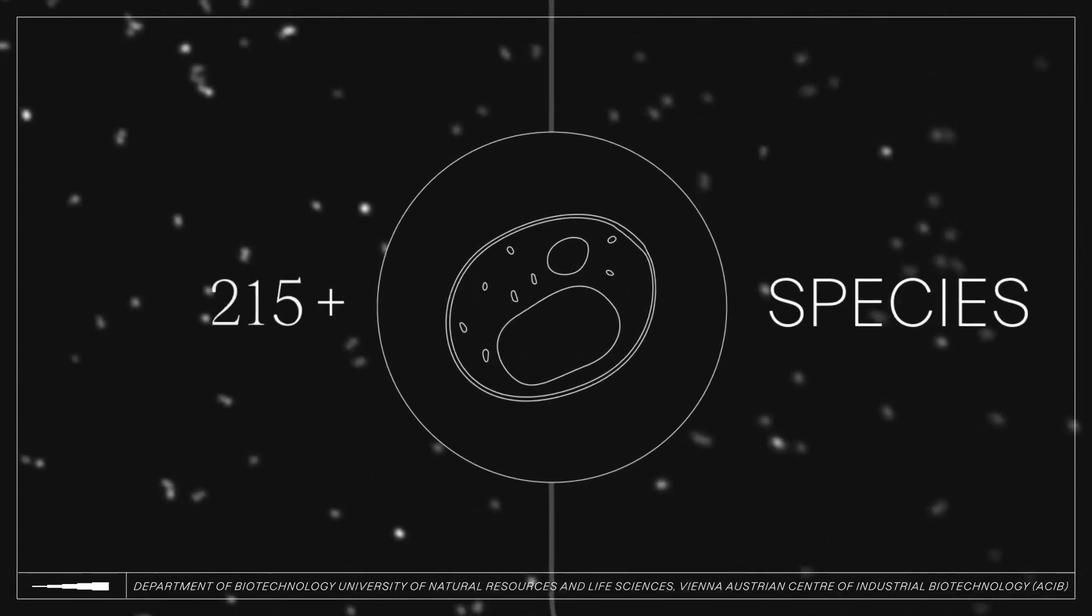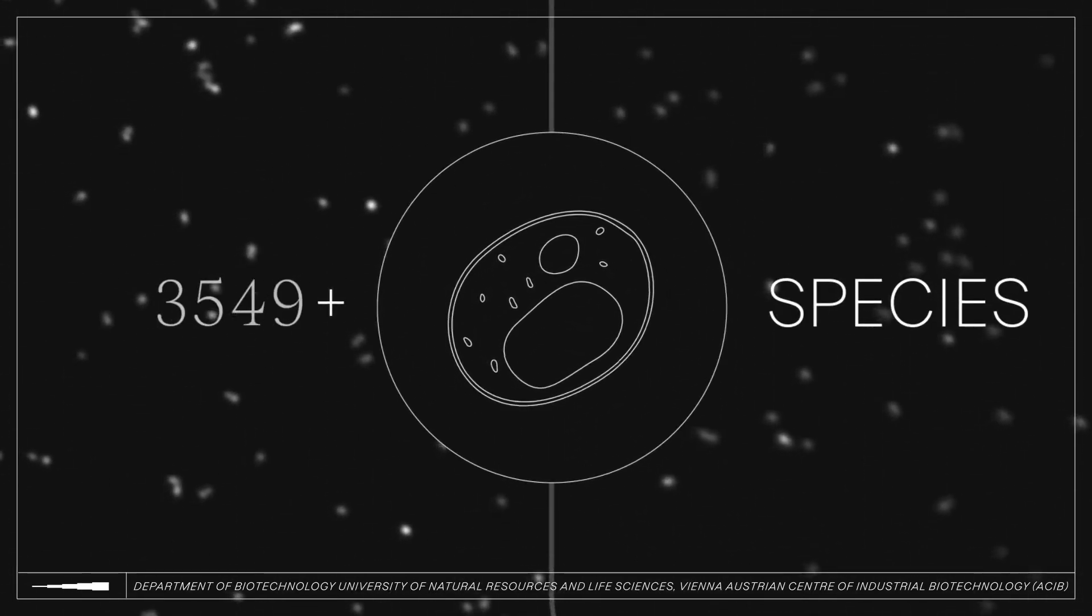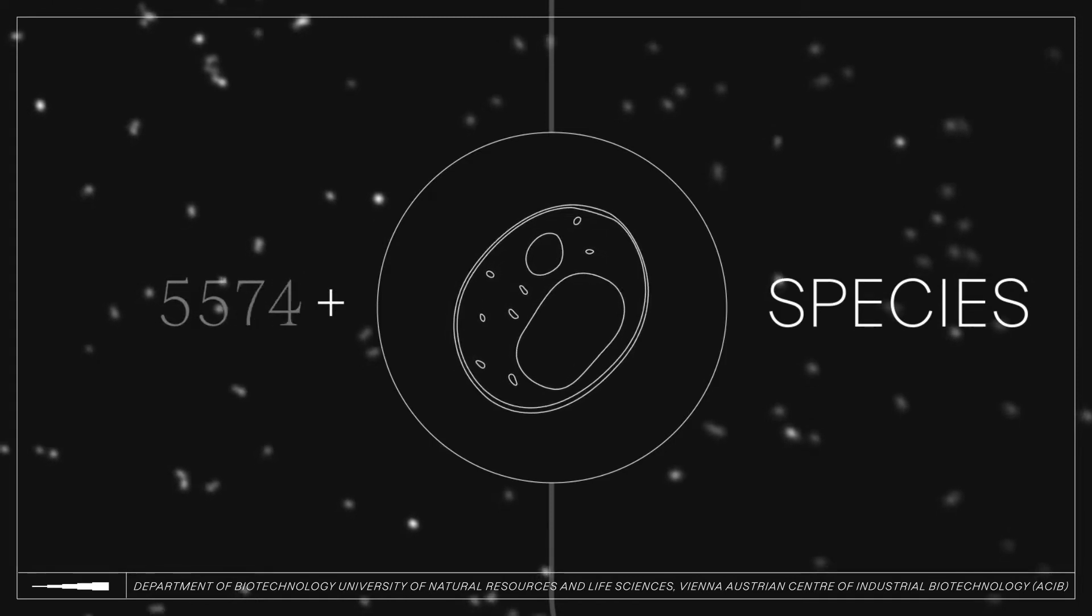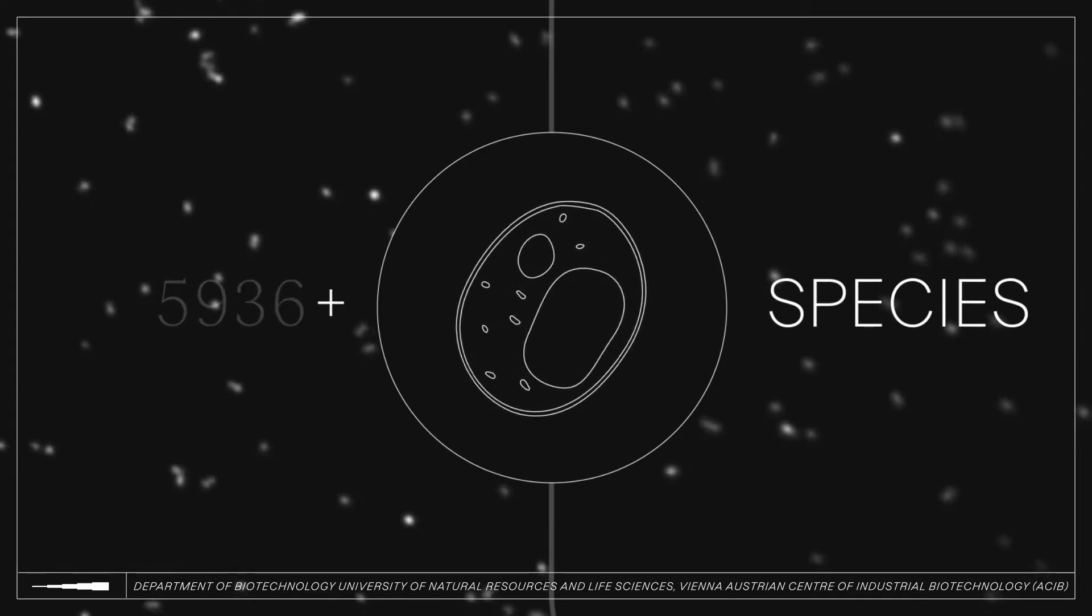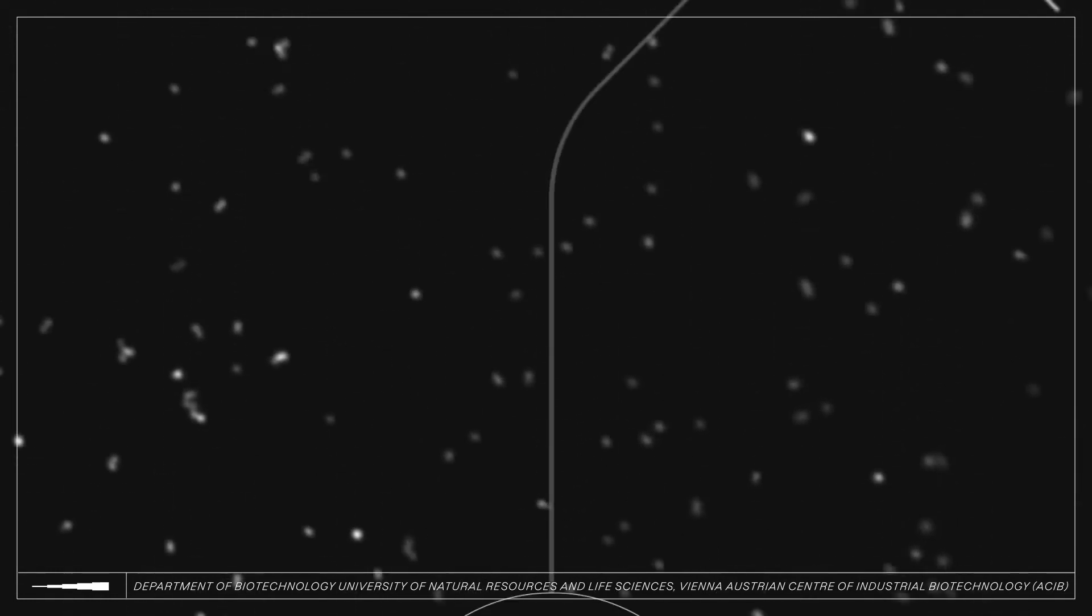There are more than 6,000 known species of yeast. They live on plants, on rocks, in water, and both on and in animals. Some would say that they have a wide variety of talents.